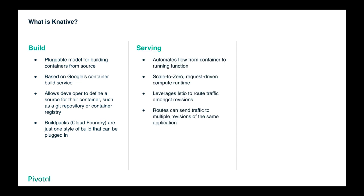The serving component of Knative automates the flow from a container to a running function — that is, everything after building the container. It creates new revisions of applications as well as handles the routing and scaling. As demand on the application or function grows, the application scales up. As it drops to zero, so do the number of pods. Thanks to Istio, the serving layer can dynamically update routing to multiple revisions of the same application, allowing for easy operations such as zero downtime deployments, partial load testing, and code rollback.